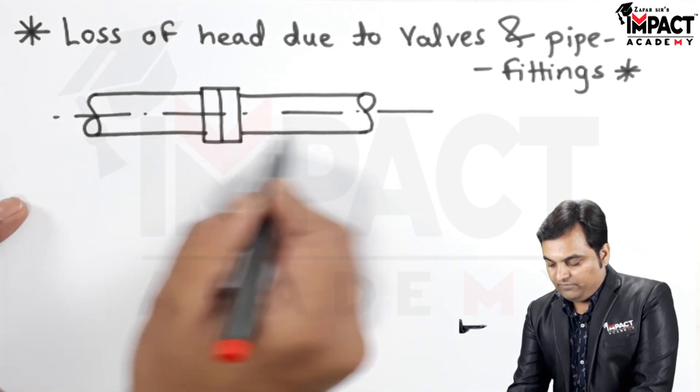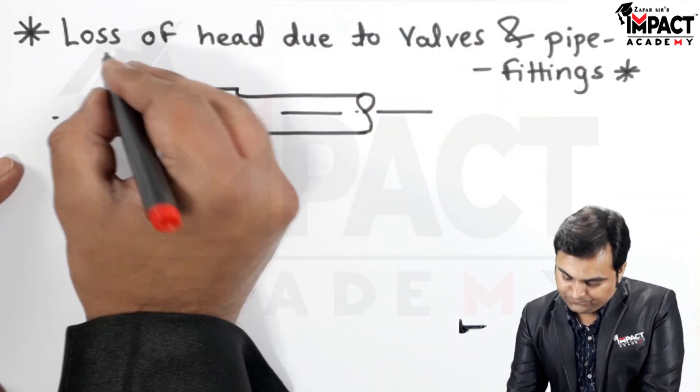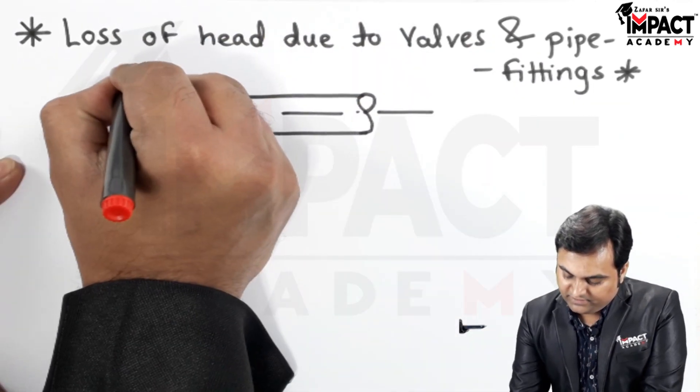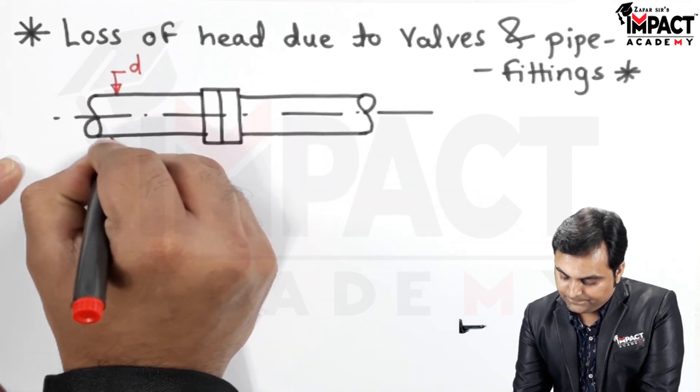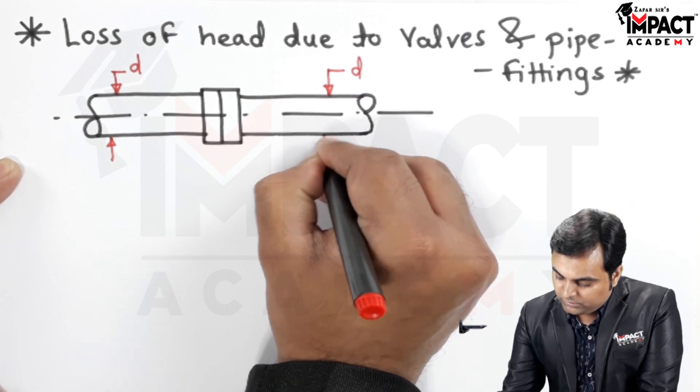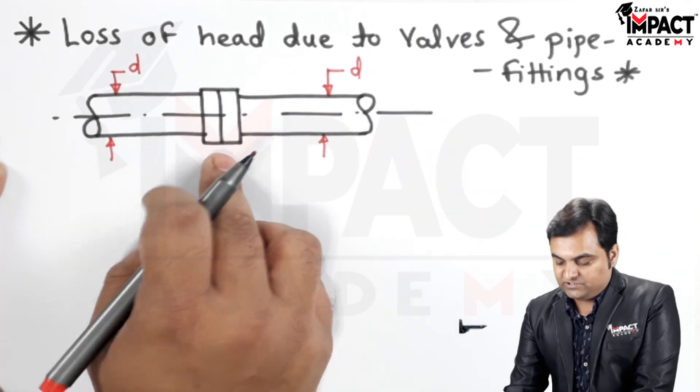Now here we have two pipelines having the same diameter d, connected with the help of this coupler.